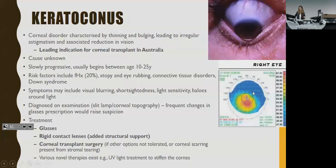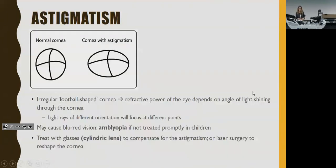In terms of conditions affecting the cornea: keratoconus is when the cornea becomes weak and bulges out like a cone. It's the main indication for a corneal transplant in Australia, and treatment includes wearing rigid contact lenses to add structural support. Astigmatism is another condition where the cornea is irregular — shaped like a football. The refractive power depends on the angle of light coming through it, so some areas might be short-sighted and some long-sighted. You treat that with a cylindrical lens.